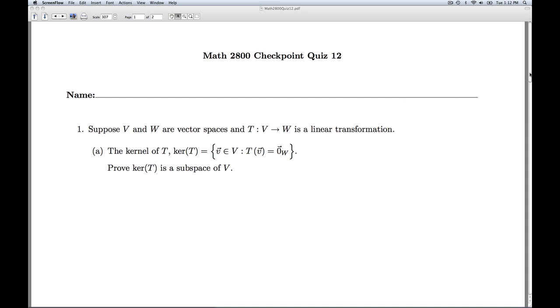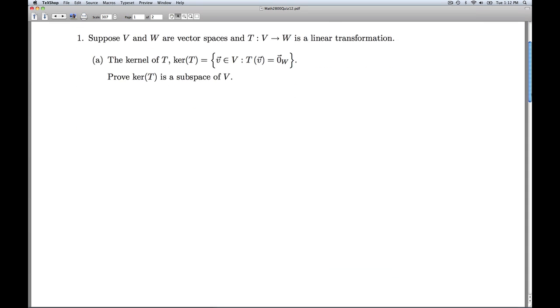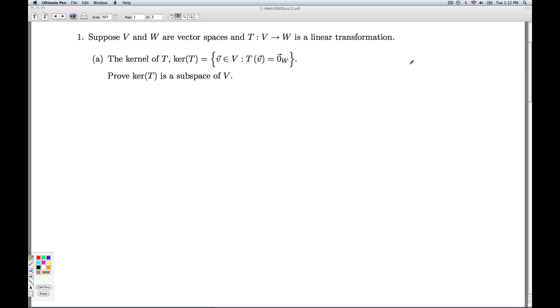Hi folks, this is linear algebra quiz 12. We're given V and W, two vector spaces, and a function T is a linear transformation between the two. We're given two sets to look at.